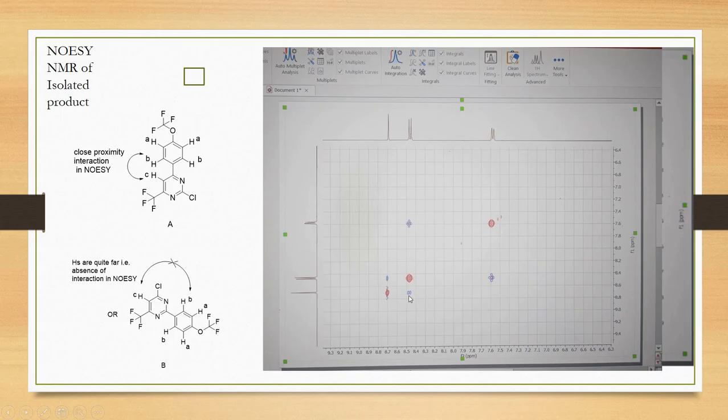Therefore, we can say that our isolated product was A, not B. This is the best example to understand the importance of NOESY NMR and to understand how to solve NOESY NMR. Thank you very much for watching this video.